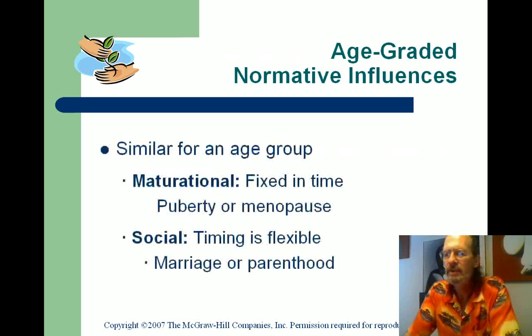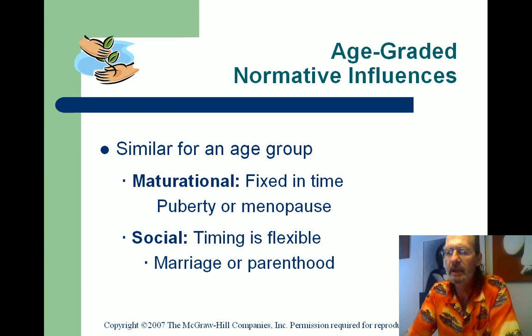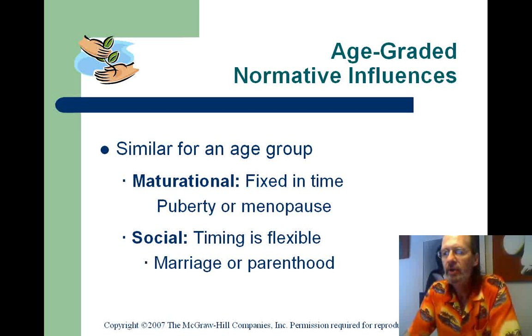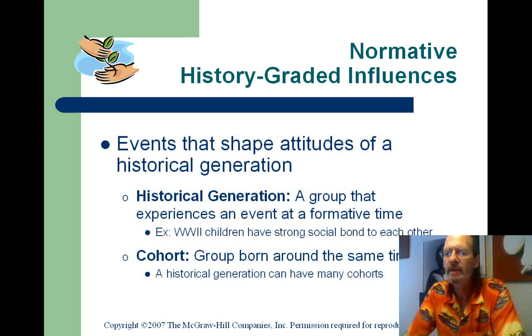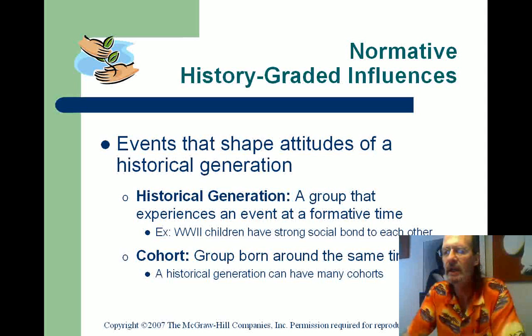Normative influences are things that happen to us that are normal and tend to be similar for an age group — puberty, menopause. Social normative influences are more flexible but we still tend to start school, start driving, and begin dating within a few years of each other. Know what your cohort is — it's the group born around the same time who would have gone through many of the same general experiences.